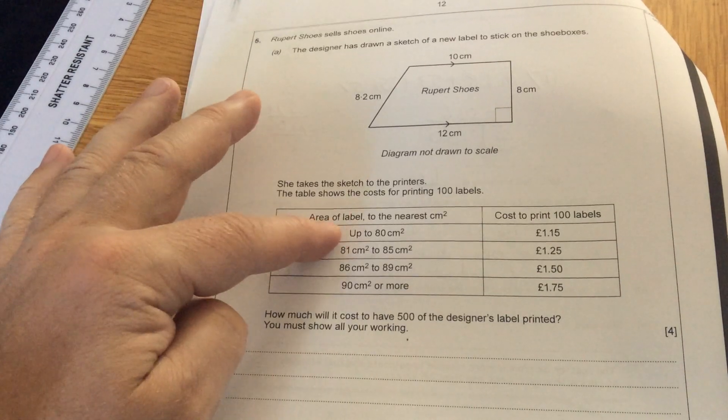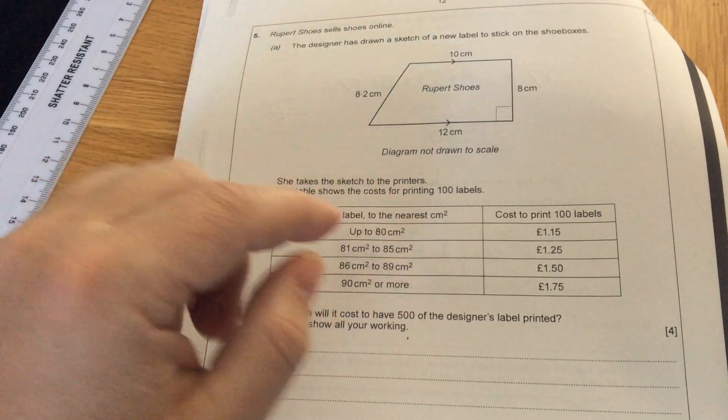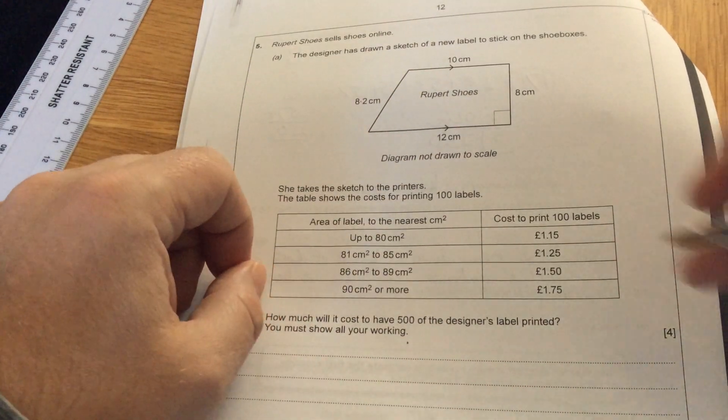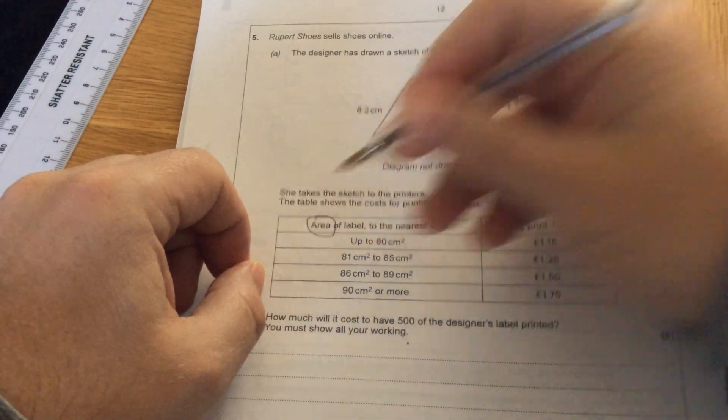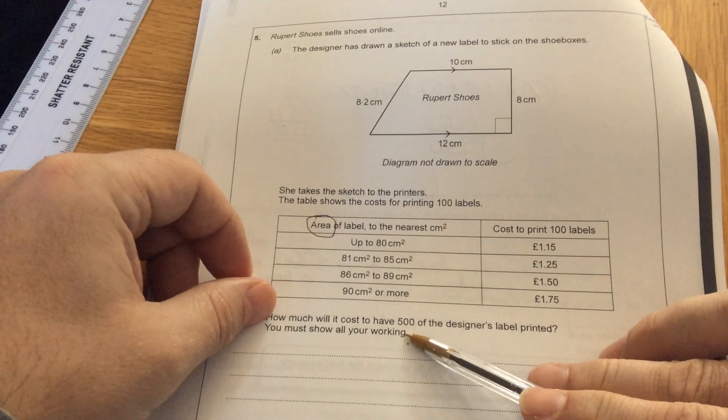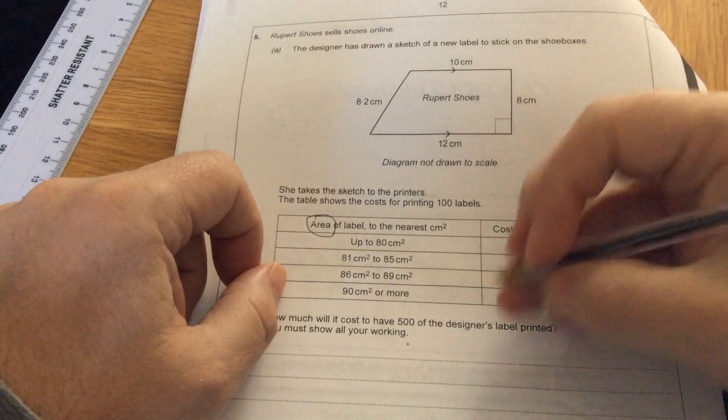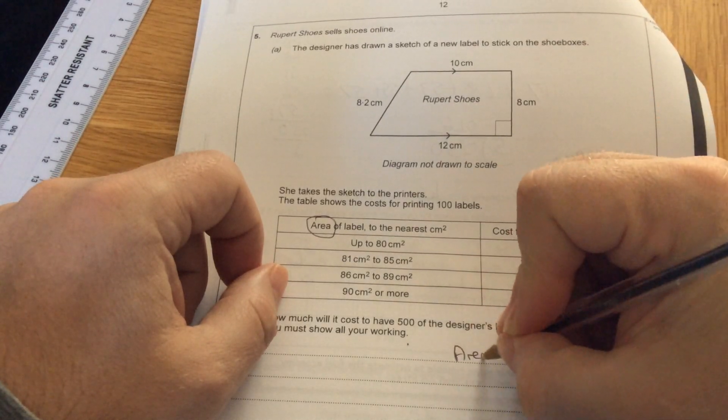They give an area of label to the nearest centimeter squared and how much it costs for 100 labels. So the thing I'm picking up here is it's to do with the area of a trapezium. How much will it cost to have 500 of the designer labels printed?